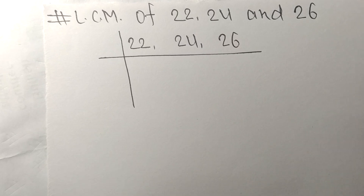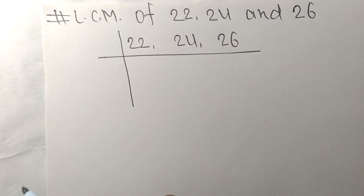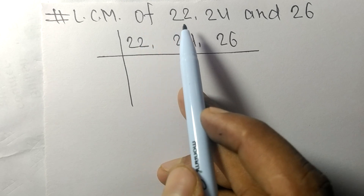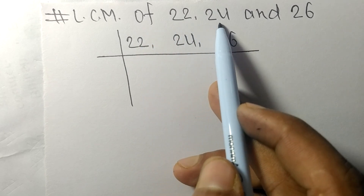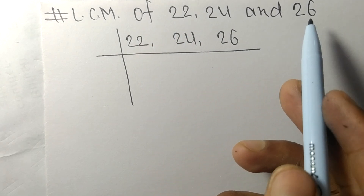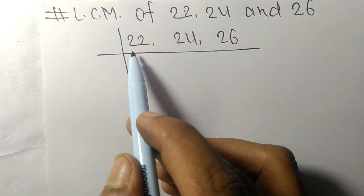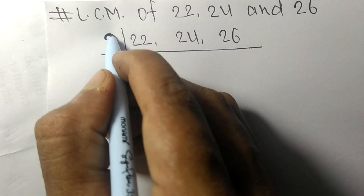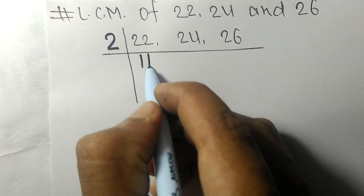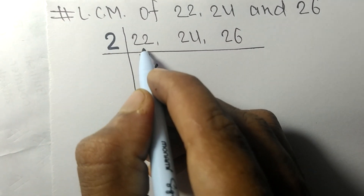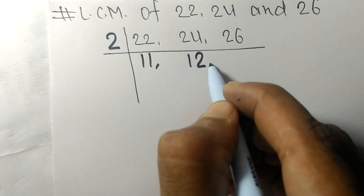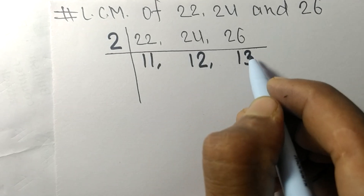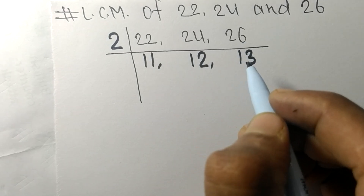Today we shall learn to find the LCM of 22, 24, and 26. All these numbers are divisible by 2: 2 times 11 equals 22, 2 times 12 equals 24, and 2 times 13 equals 26.